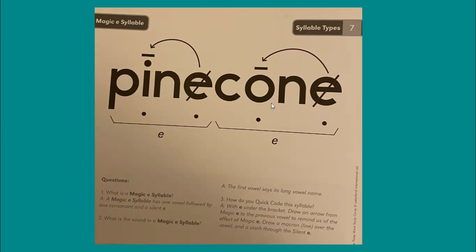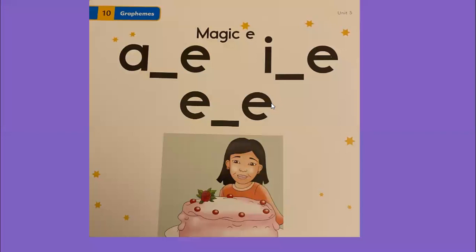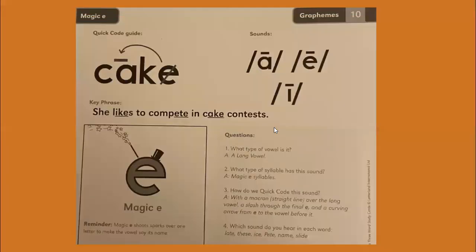And you do the same for 'cone.' These are the patterns: A, consonant, silent E at the end; I, consonant, silent E at the end; E, consonant, E — just like in 'cake.' Remember when we code: long A, Mr. A gets a straight line over it, slash through the silent E, and put an arrow back to that long vowel.